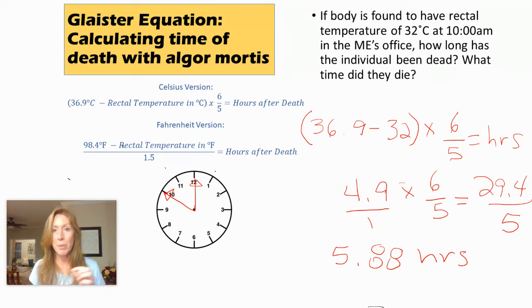So now that we know that the person died about 6 hours ago, let's go back to the clock face. We know that we took their rectal temperature in the medical examiner's office at 10 a.m. So let's work backwards on the clock, 6 hours.